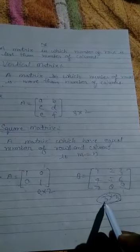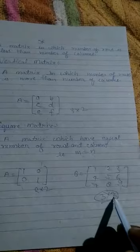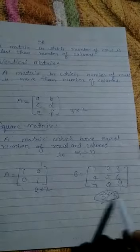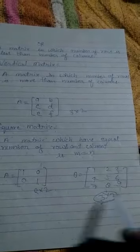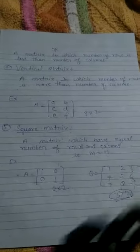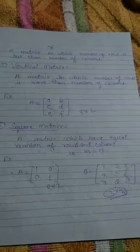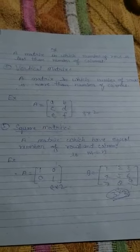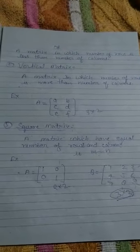Here m and n are equal. 3×3, 1×1, 4×4, these are called square matrices. So I hope you have understood. If any problem, you can ask. Thank you.